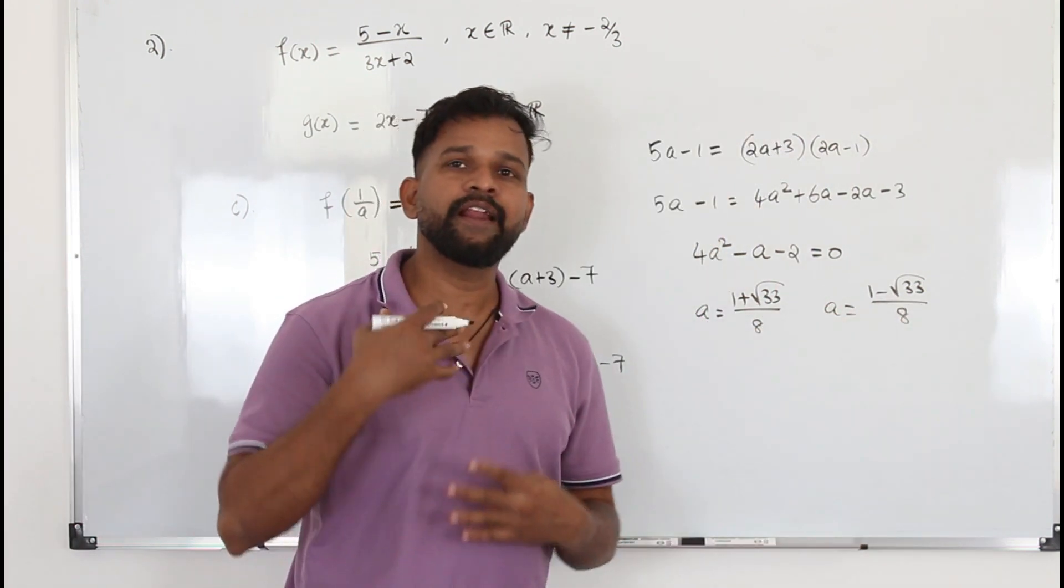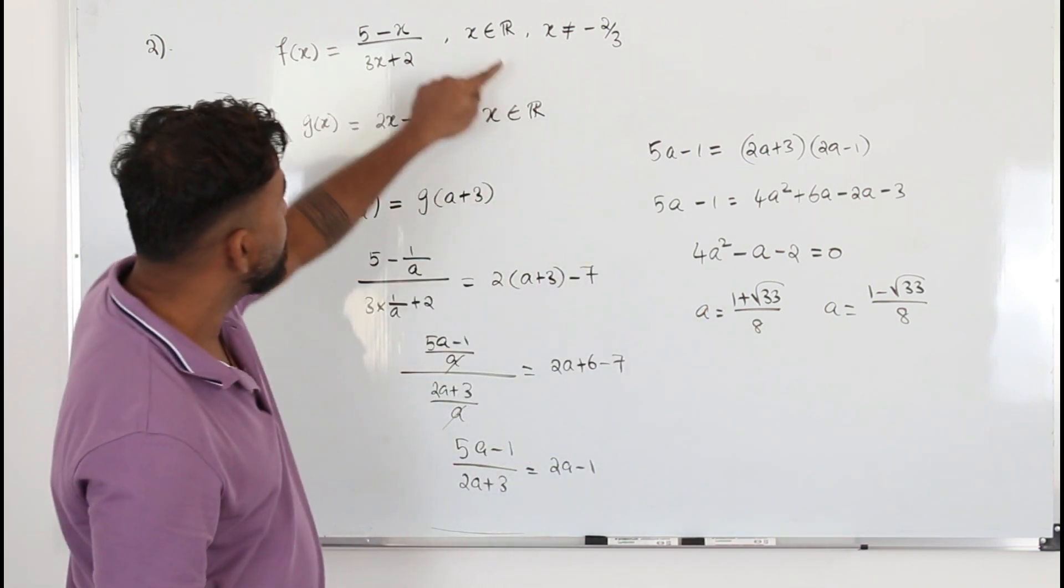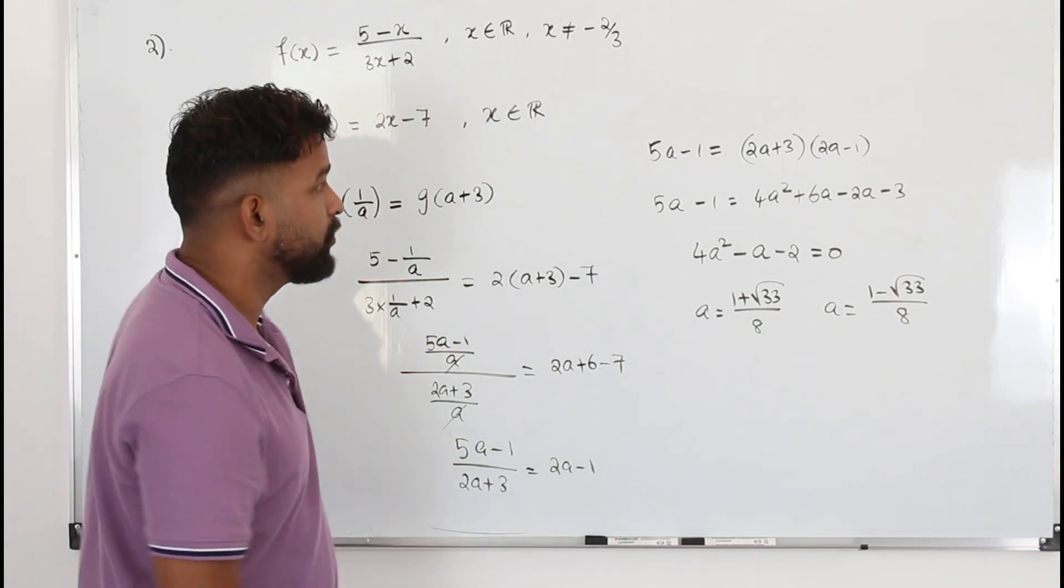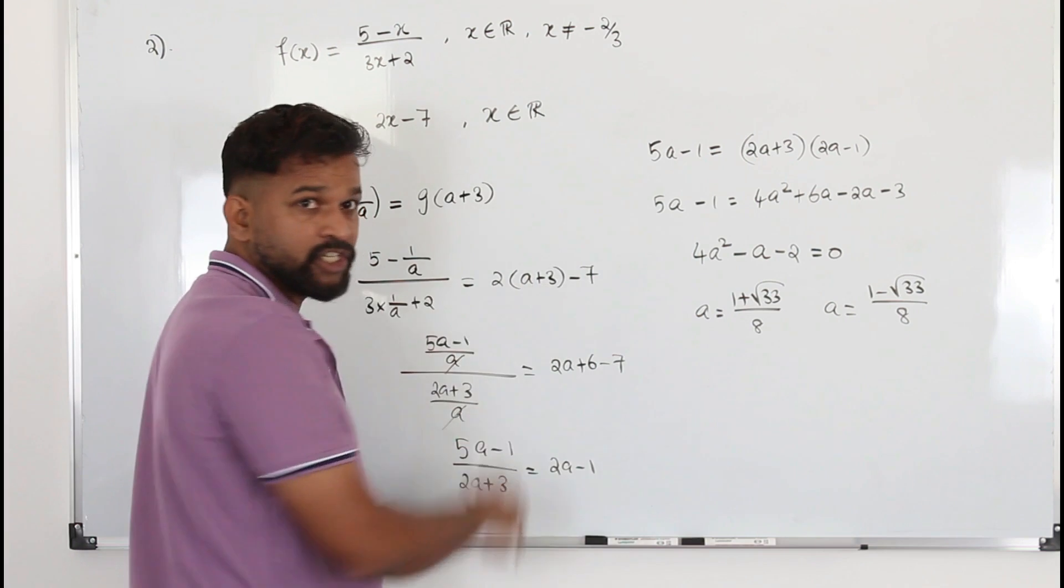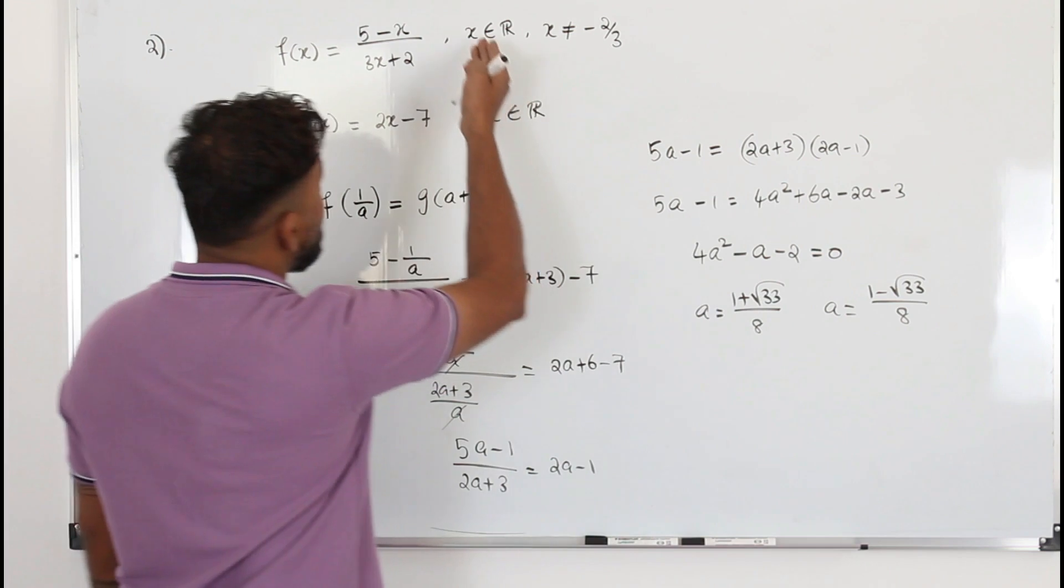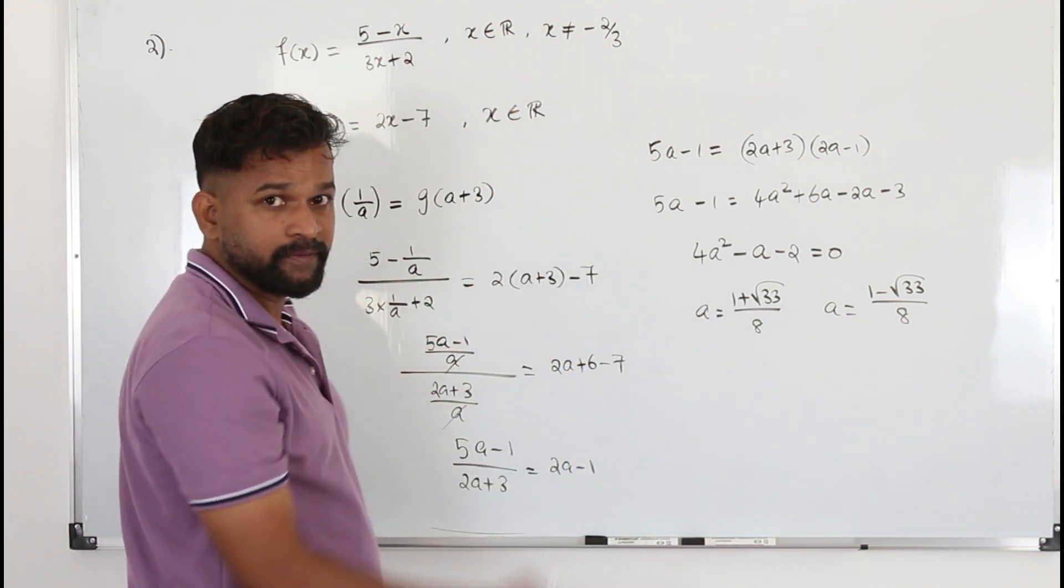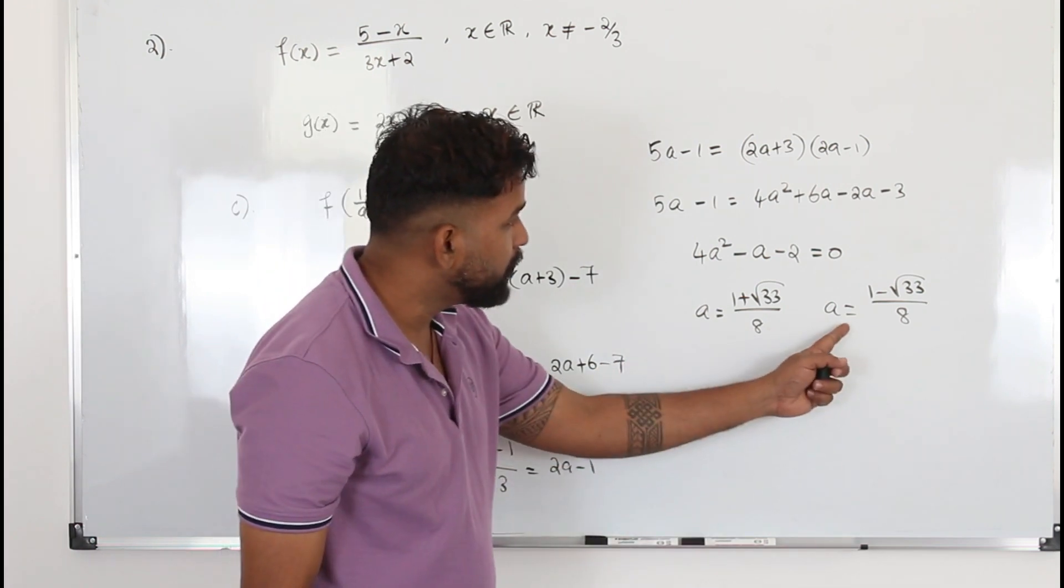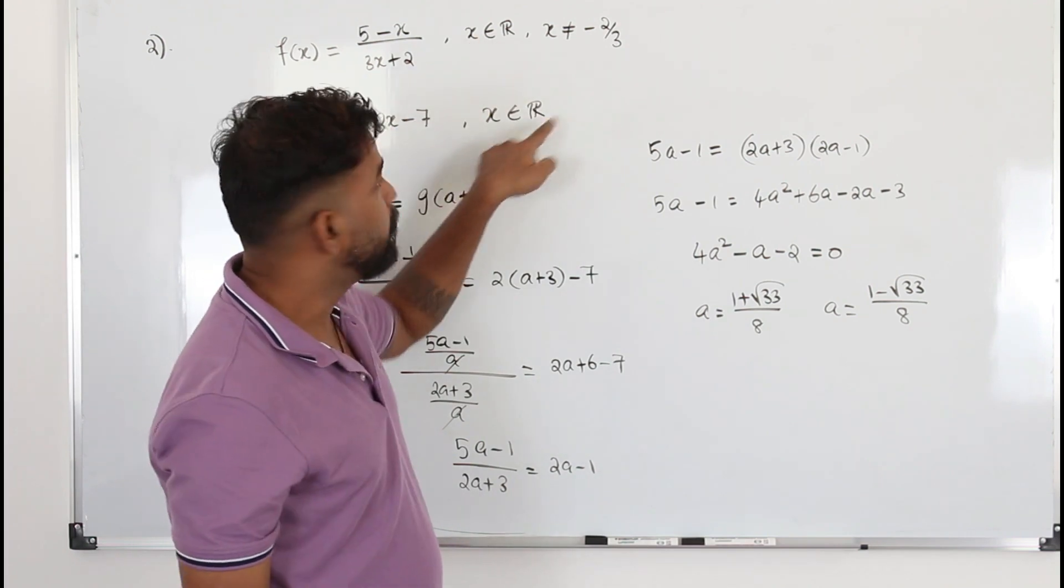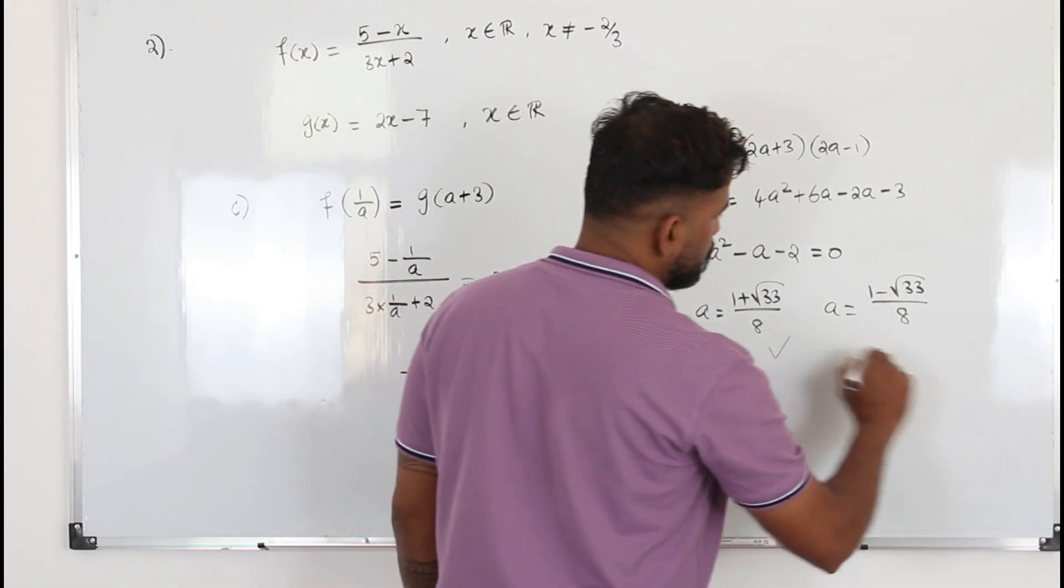You see here, once you got the values, you cannot happily move on to the next question. You always take these values, take against the domain of these two functions. That's a very important step. The value should satisfy these conditions actually. Okay, now you see here it's a positive number. X takes all the real numbers. You need to check against both domains. So a can be positive, a can be negative also. Let's say this is a negative number. X can be any real number as long as it's not -2/3. So both are the right solution.